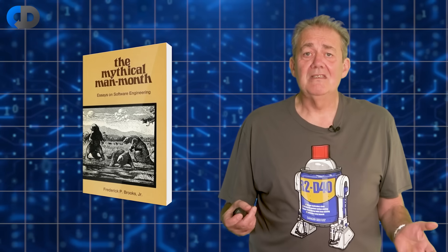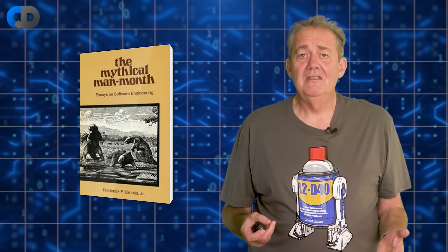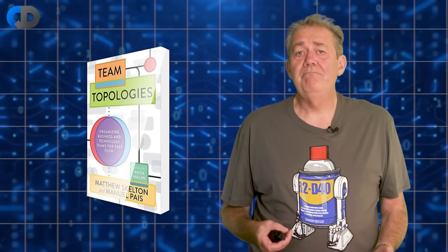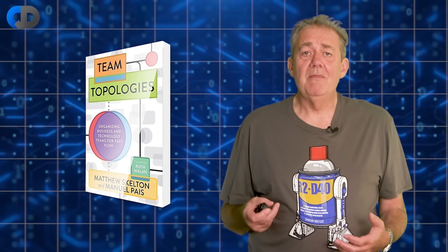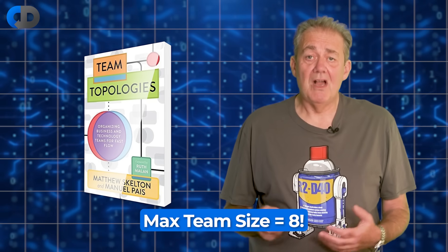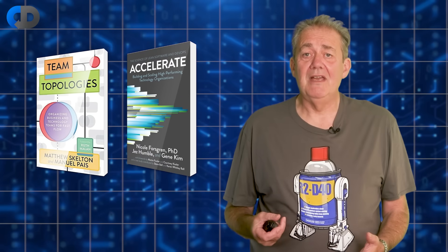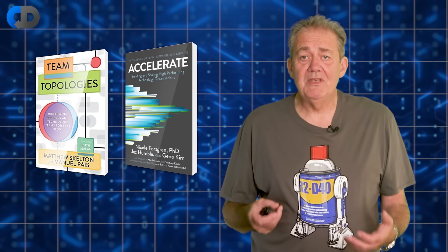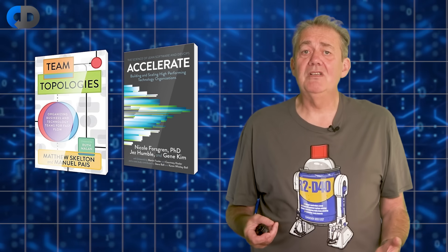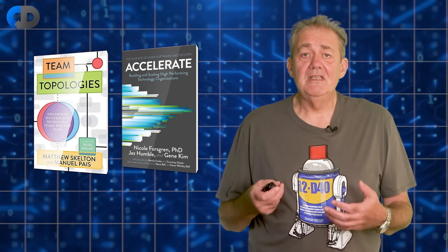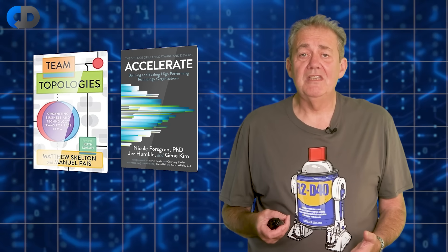Since at least 1970 when Fred Brooks talked about it, but we regularly seem to forget it anyway. The excellent book Team Topologies recommends a maximum team size of only eight people, and the other excellent book Accelerate says that one of the main predictors, the defining characteristics of excellence in software development, is the autonomy of those teams.